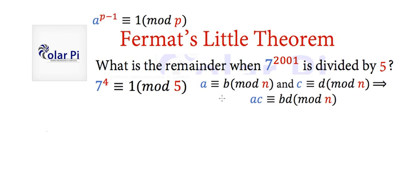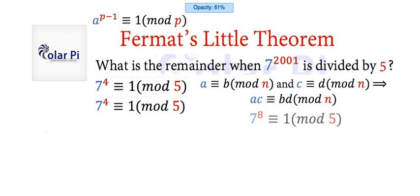Cool. But where's our second statement? Well, we're allowed to write the same statement by applying Fermat's Theorem once. So we write this. Now, we've got two statements where we can use the multiplication rule for modular arithmetic. So using this multiplication rule, we can write the following: 7 to the 8th is congruent to 1 mod 5.